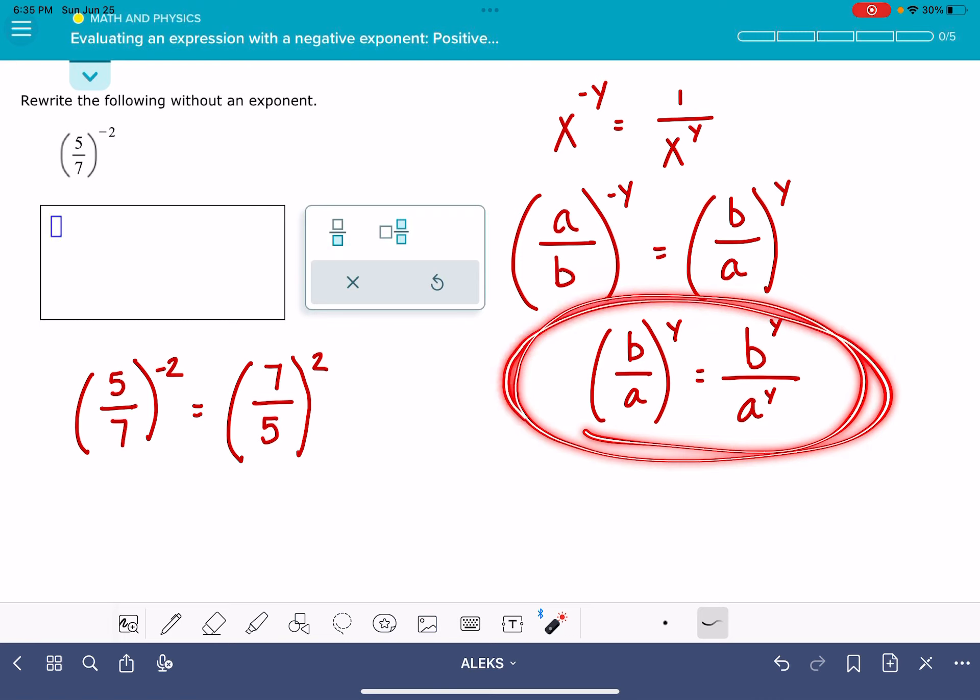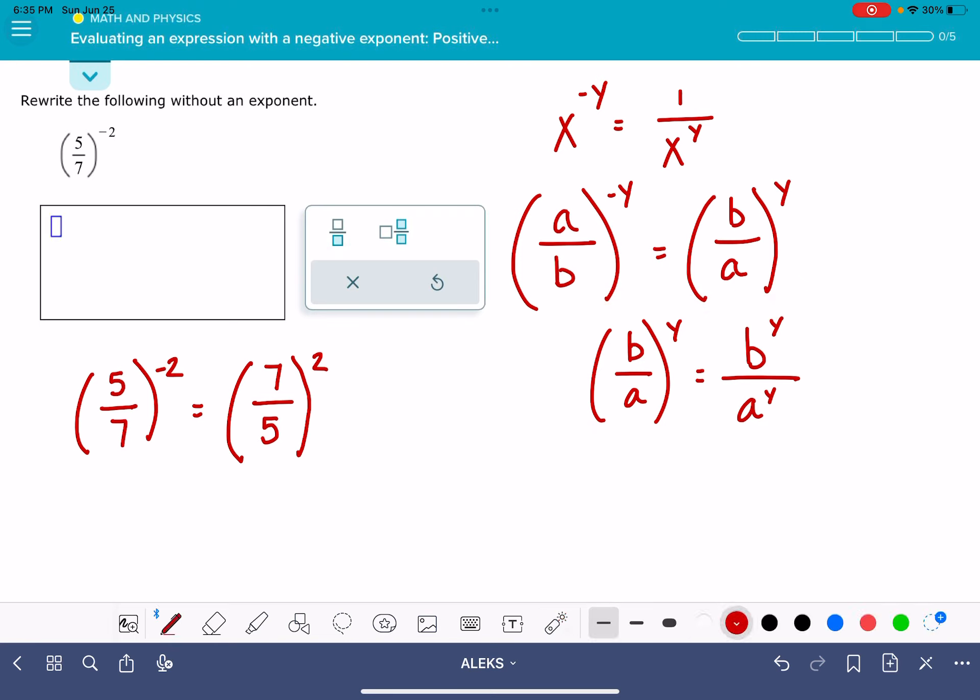And then we're going to use this rule right here that allows us to get rid of the parentheses. So instead of writing 7 over 5 to the 2, we're going to go 7 squared over 5 squared. And then we can evaluate each one of those individually. 7 squared is 49, 5 squared is 25. And that is the answer to the problem.